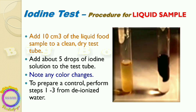For liquid samples, take up to 10 mL of the sample — 2 to 5 mL is also acceptable. Add about five drops of iodine solution to it and observe the difference in color. The solution will turn blue if starch is present, or reddish-brown to dark brown if glycogen is present.